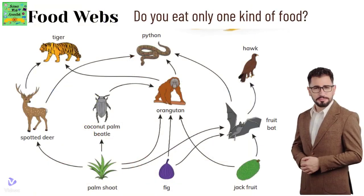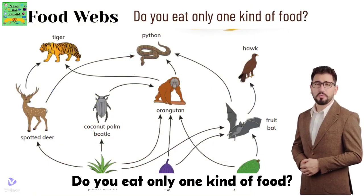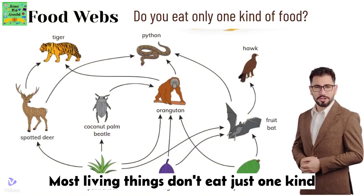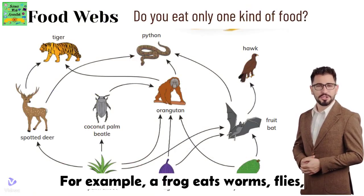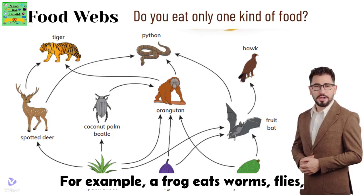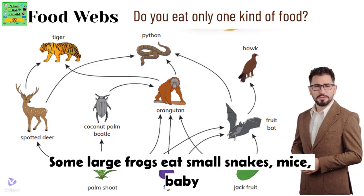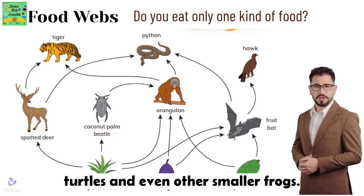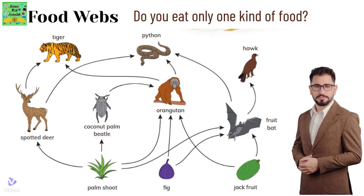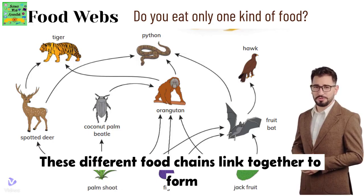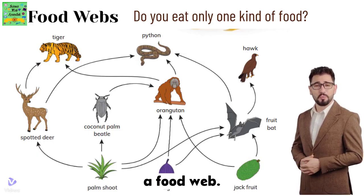Most living things don't eat just one kind of food. For example, a frog eats worms, flies, beetles and other insects. Some large frogs eat small snakes, mice, baby turtles and even other smaller frogs. This means that most animals are part of more than one food chain. These different food chains link together to form a food web.